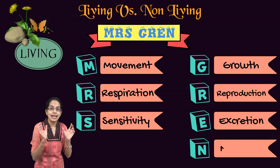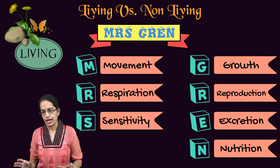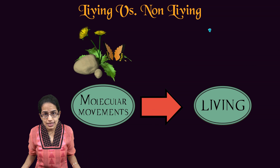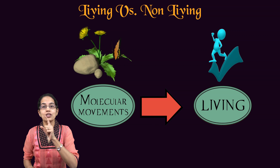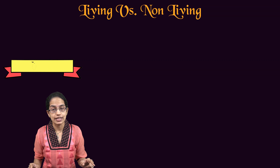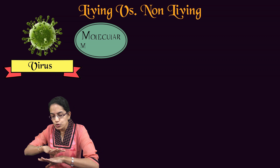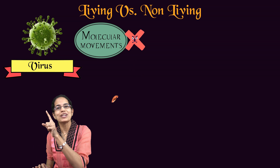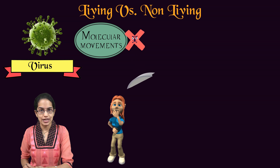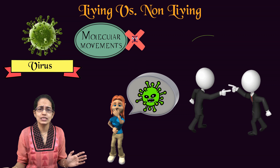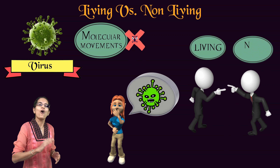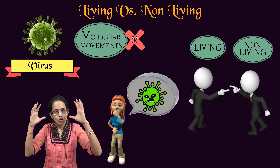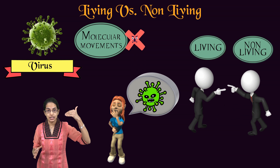These are the seven basic characteristics of a living organism. When we talk about molecular movements, we say the organism is living, and therefore it is hard to classify viruses because viruses do not have any molecular movement — they have molecular movement only once they infect. Therefore there is always a controversy whether to classify viruses as living or non-living.